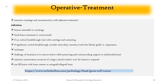Operative Treatment: Extensive curettage and reconstruction with adjuvant treatment. Indications include lesions amenable to curettage. Hand lesion treatment is controversial: if no cortical breakthrough, treat with curettage and cementing; if significant cortical breakthrough, consider intercalary resection with free fibular allograft versus amputation. The challenge of treatment is to remove the lesion while preserving the joint and providing support to the subchondral joint. Extensive exteriorization — removal of a large cortical window over the lesion — is required. The lesion can be filled with bone cement or autograft/allograft bone.